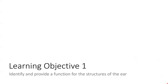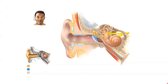To begin this module, we will look at the structures located in the ear and the functions of each of those structures. The ear is the focus of this module because it contains the receptors for both hearing and equilibrium. The ear is divided into three main regions: the external or outer ear, the middle ear, and the internal or inner ear.